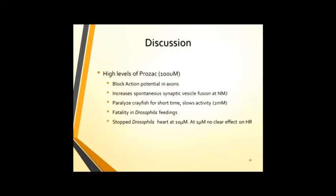In discussion, at high levels of Prozac, 100 micromolar or greater, we can block action potentials in crayfish axons, increase spontaneous synaptic vesicle fusion or minis in the NMJs, and completely shut down the EPSPs of crayfish and Drosophila. We've also shown that it's possible to paralyze crayfish for a short time and slow their activity at 2 millimolar solution injections. There's also been fatality in Drosophila feedings and we've shown that Prozac is able to stop Drosophila hearts at concentrations greater than 10 micromolar and that there's less of an effect at concentrations lower than that.